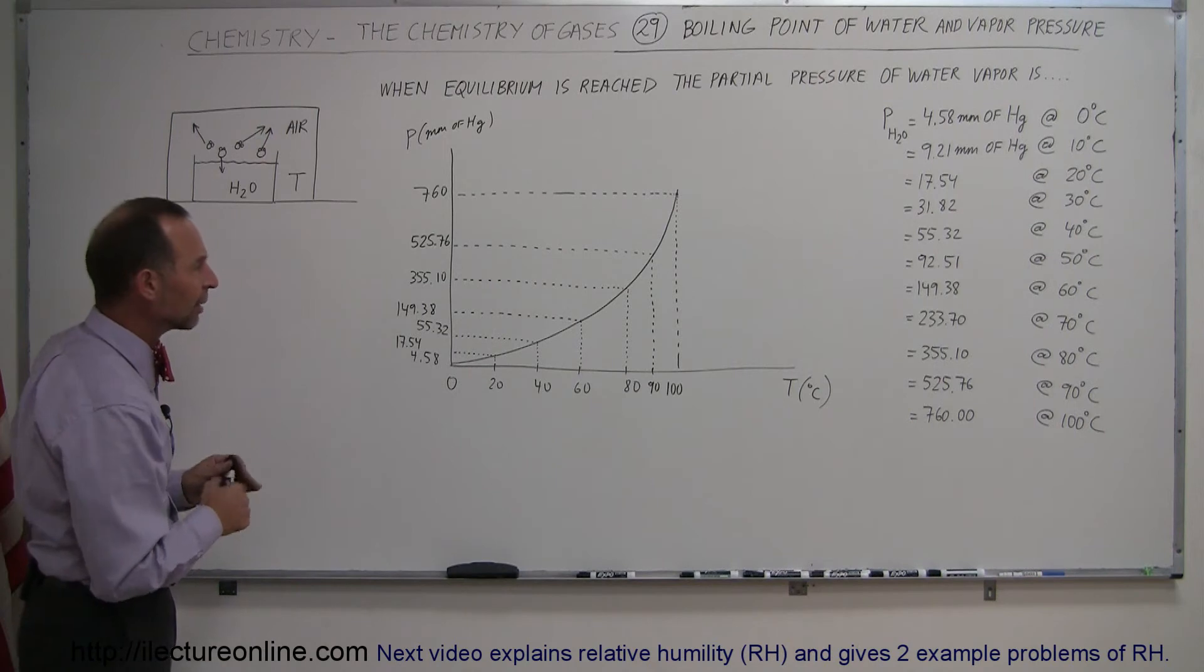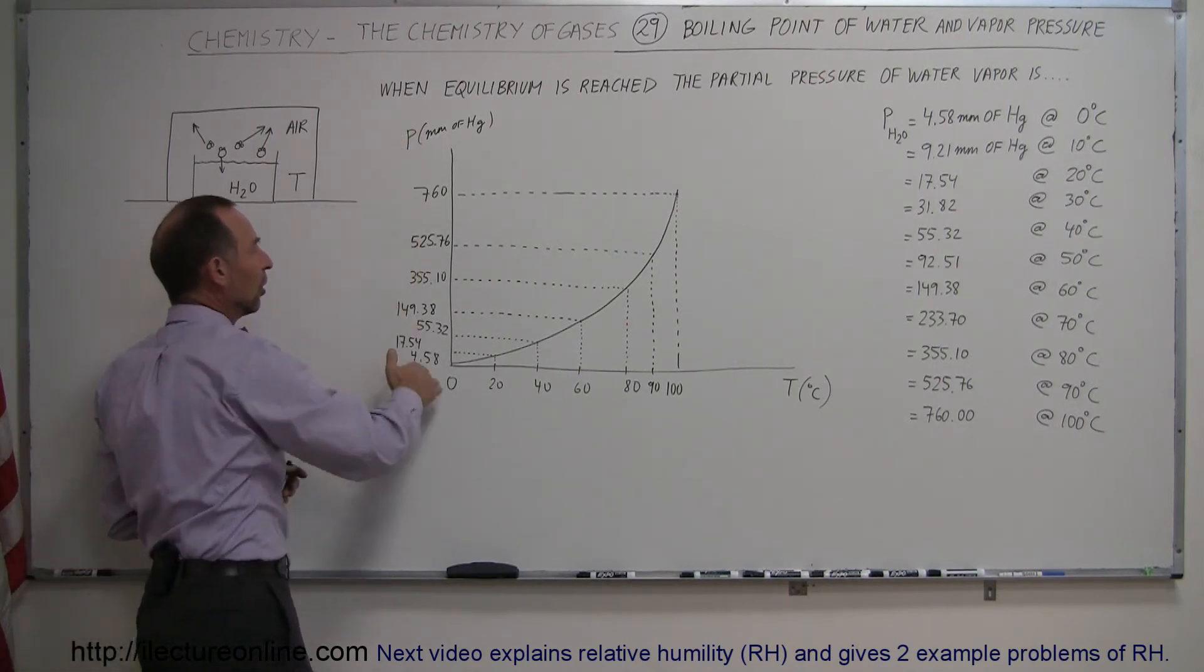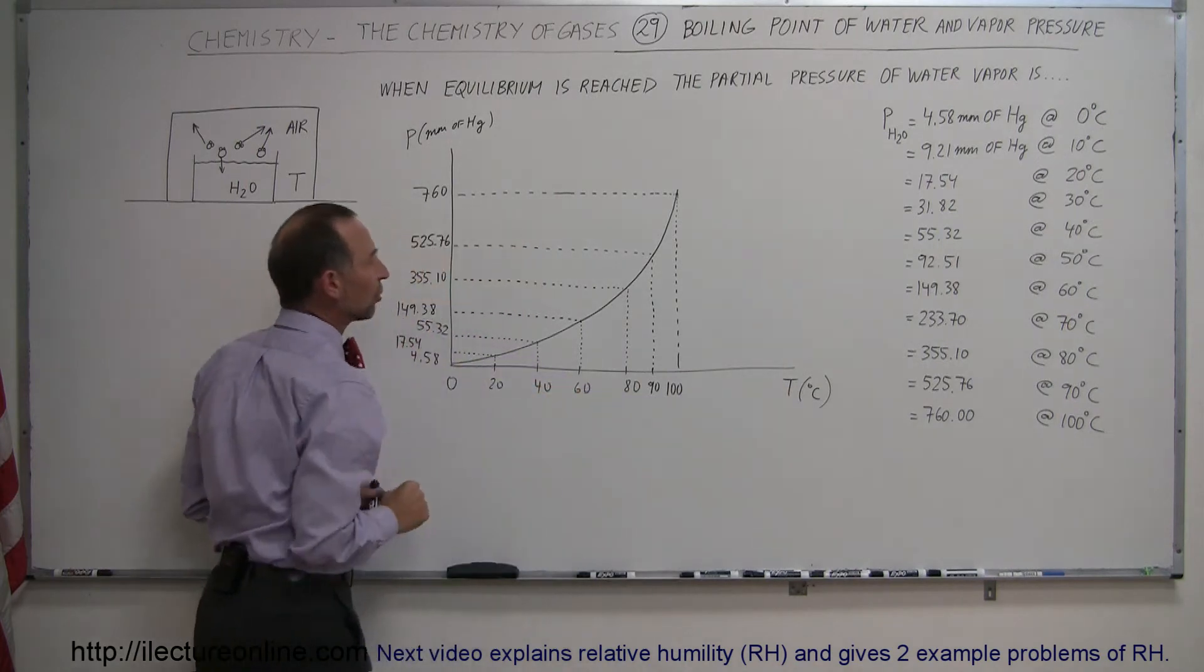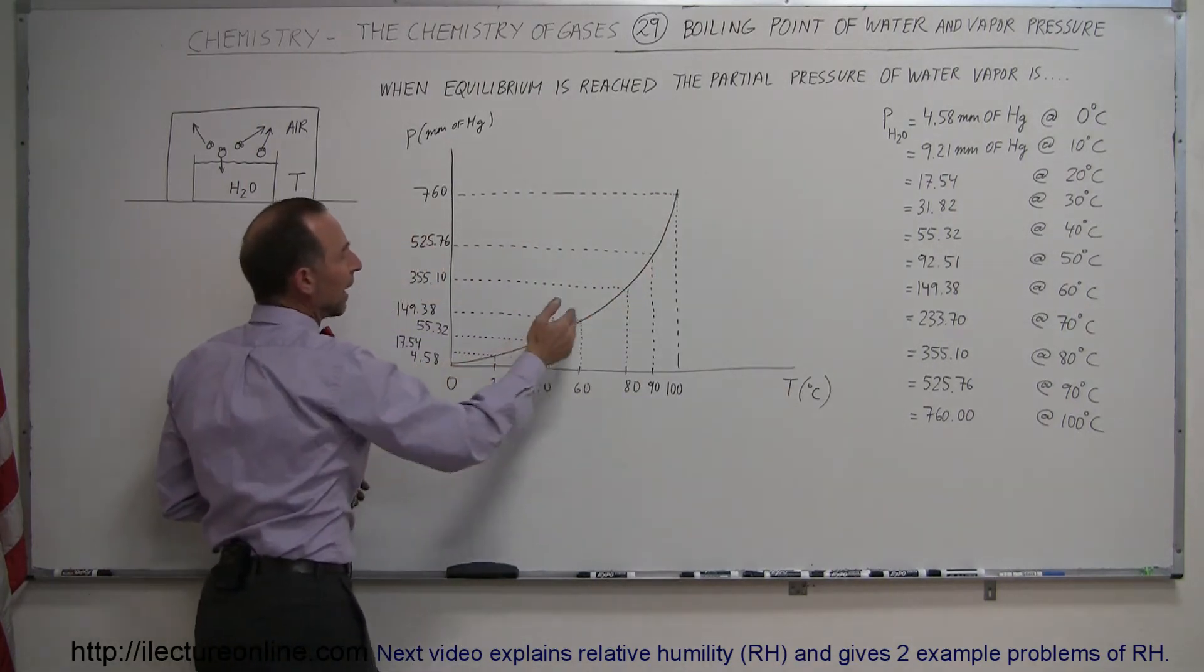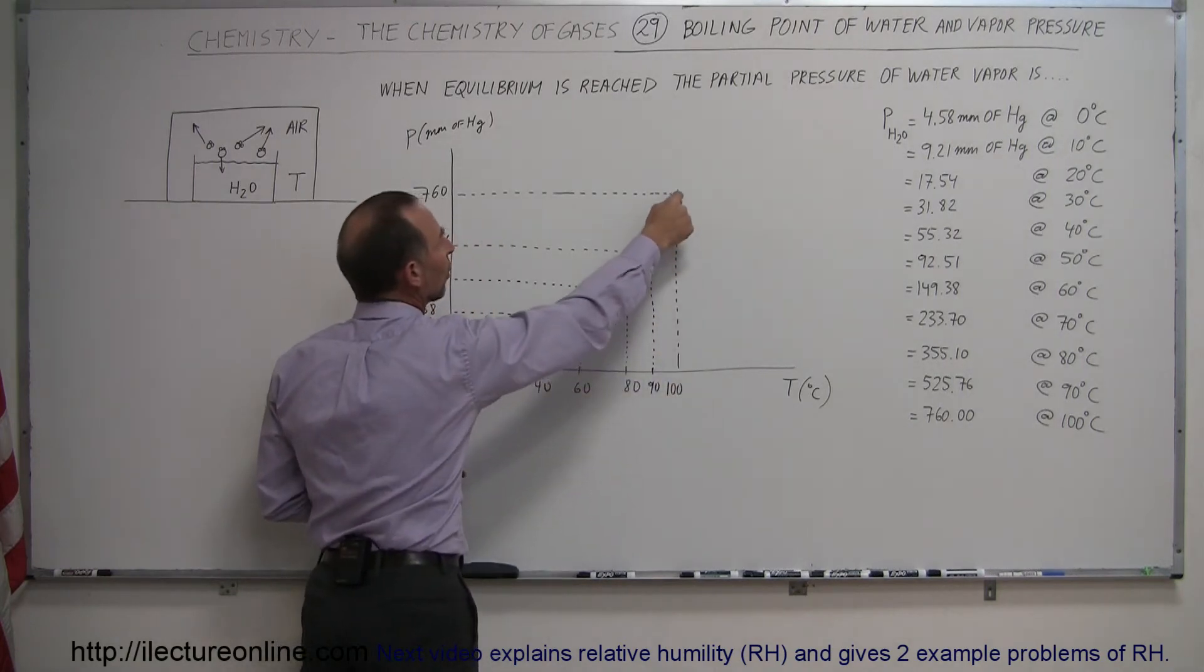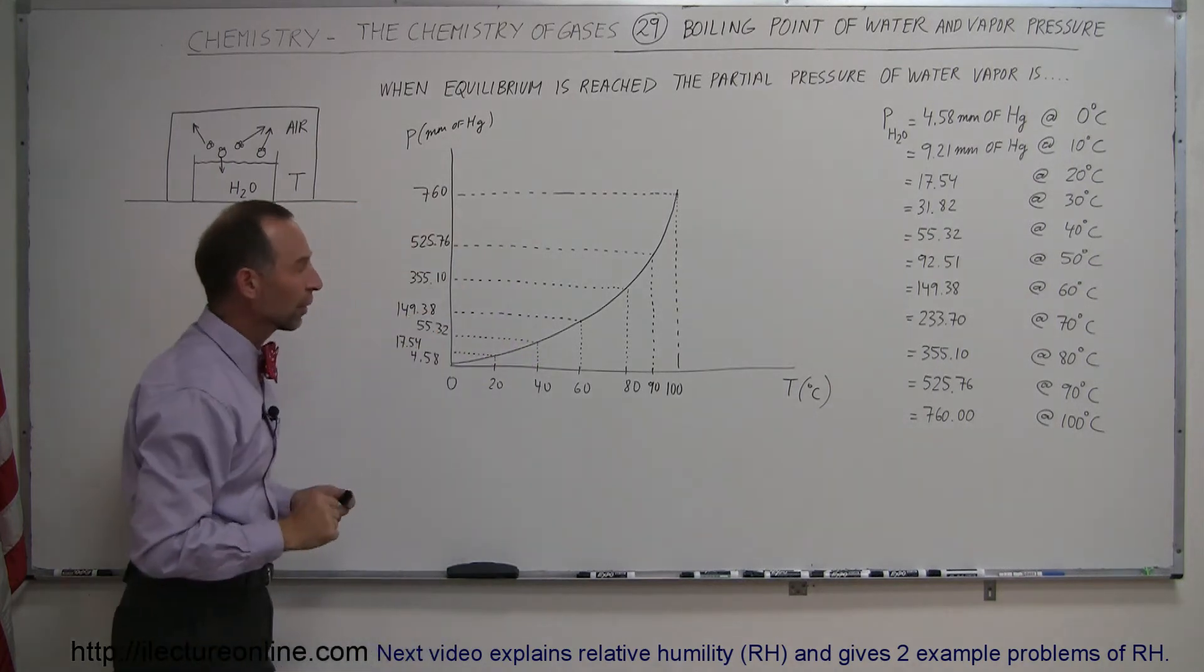Now, if we do that on the diagram, if we take a look on the diagram like this, on the vertical axis we have pressure. On the horizontal axis we have temperature. You can see that the curve is kind of exponential like this. And at 100 degrees centigrade, water will boil at 760 torr or 760 millimeters of mercury.